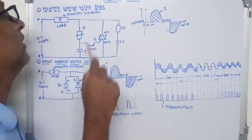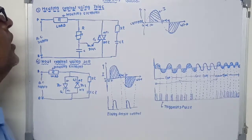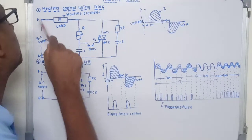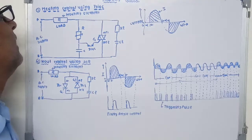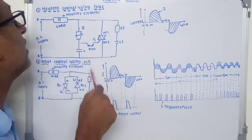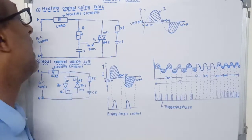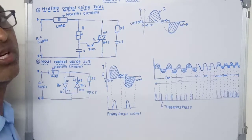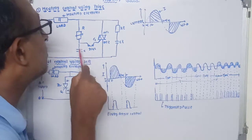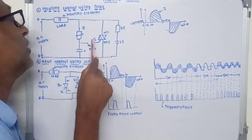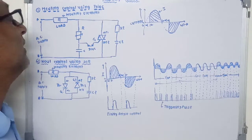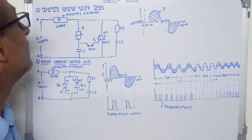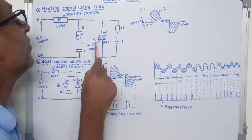The snubber circuit provides dv/dt protection to the TRIAC. During the positive half cycle of the input, terminal A becomes positive compared to terminal B. The capacitor starts to charge through the variable resistance R. When the potential difference across the capacitor exceeds the breakdown voltage of the DIAC — approximately 31V — the DIAC offers very low resistance.